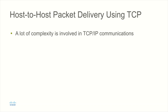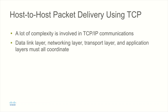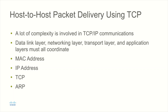There's actually quite a bit of complexity involved in TCP communications. When you think about it, you have a number of layers: the data link layer, the network layer, the transport layer, and the application layer — all involved in this communication and they all have to coordinate with one another. You have MAC addresses at the data link layer, IP addresses at the networking layer, TCP at the transport layer, and ARP sitting between the data link and the networking layer. These are just a few examples; there are other protocols and functions that are all happening in concert with one another.